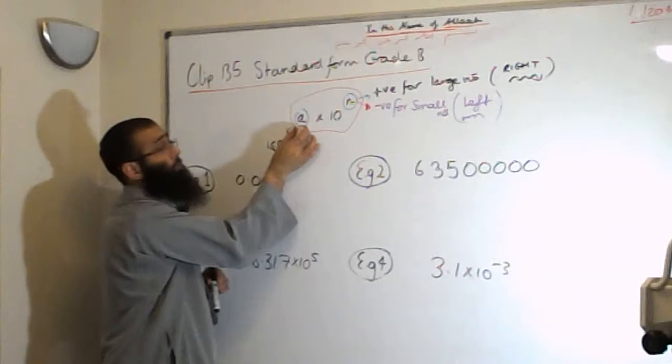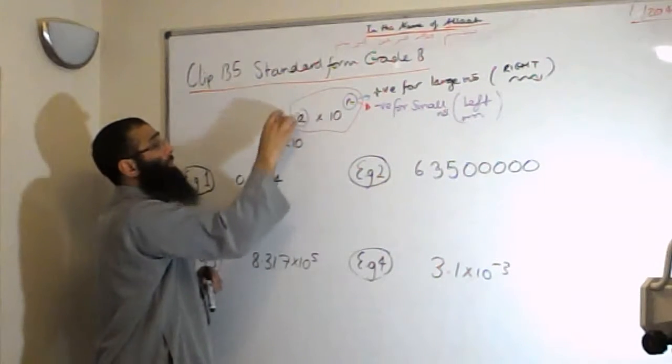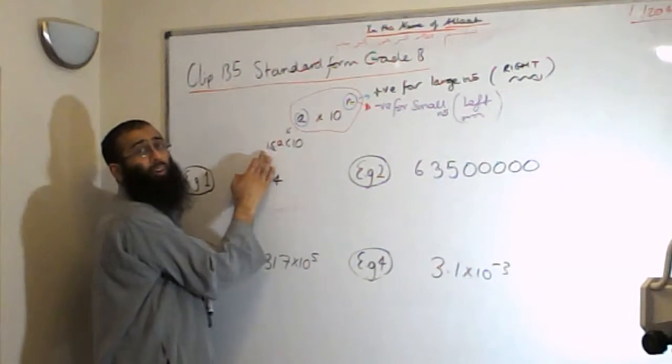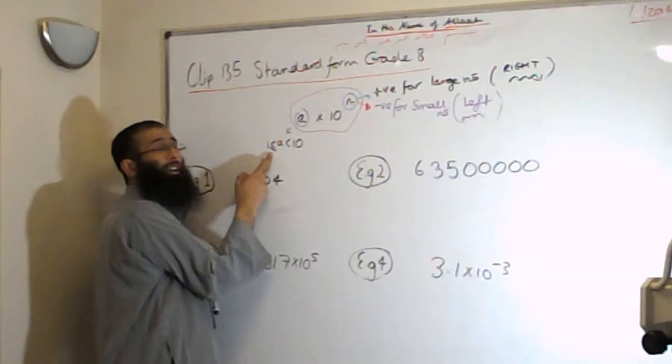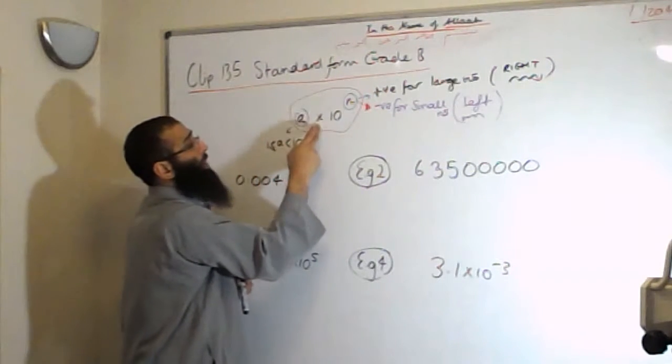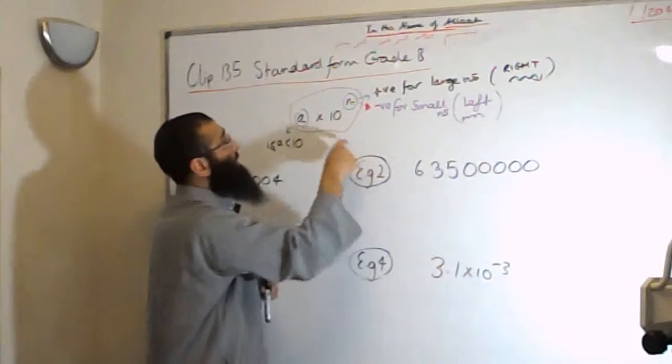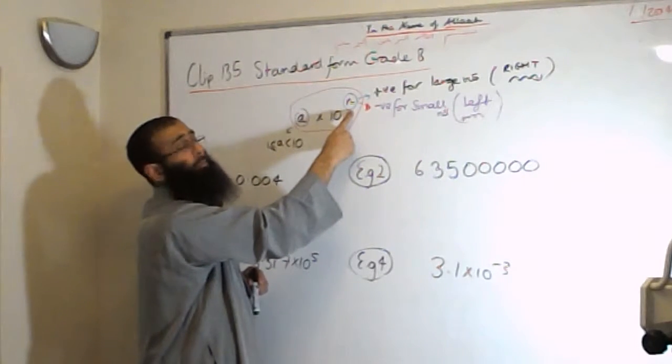We have a number at the front, we call this A. The number at the front of the standard form is always between 1 and 10, greater than or equal to 1 but less than 10. Then we times it by 10 to powers of 10. The power is indicated by the n number.